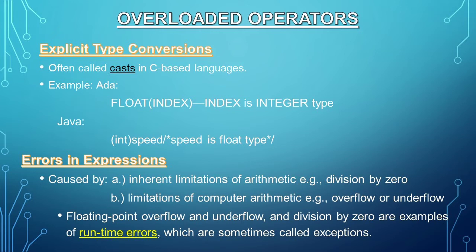Explicit type conversion is done by the user using a type operator. Users convert the data type of an object to a required data type. The difference between implicit and explicit type conversion is that implicit type conversion (automatic type conversion) is done by the compiler on its own without any external trigger from the user, while explicit type conversion is user-defined. Errors in expressions are caused by inherent limitations of arithmetic, such as division by zero, and limitations of computer arithmetic, such as overflow or underflow. Division by zero and overflow or underflow are examples of runtime errors, sometimes called exceptions.